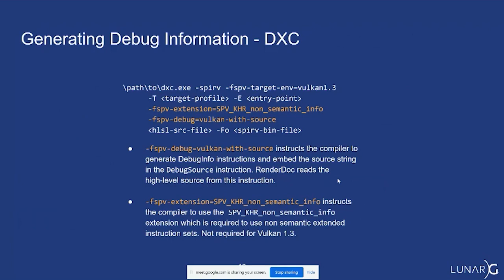Generating debug information with DXC: there's very little you have to do. The key option is -spv-debug=vulkan-with-source — that's the most important one. There's also -spv-debug=vulkan which doesn't include source, but you want to make sure you've got the source in your SPIR-V. If you're not generating Vulkan 1.3 you also have to include the SPIR-V extension SPV_KHR_non_semantic_info, but for Vulkan 1.3 and afterwards that's in core so it's not needed.